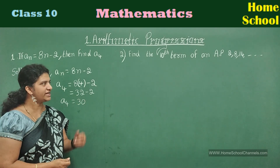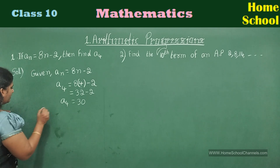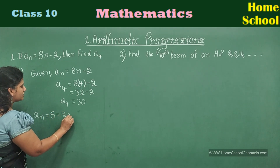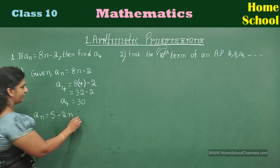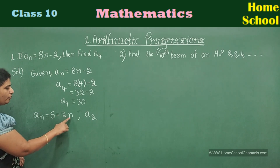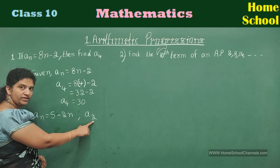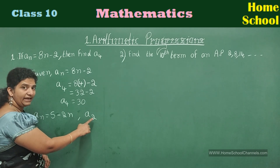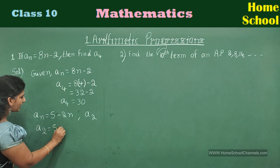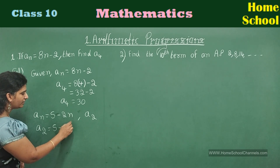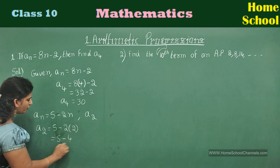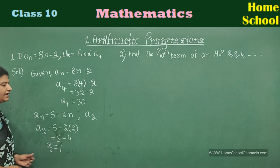Let me take one more problem. aₙ = 5 − 2n. Find the second term. To find the second term, wherever you have n, substitute 2. a₂ = 5 − 2(2). Put a bracket around the number: 5 minus 2 times 2 equals 5 minus 4, which is 1. The second term a₂ is equal to 1.